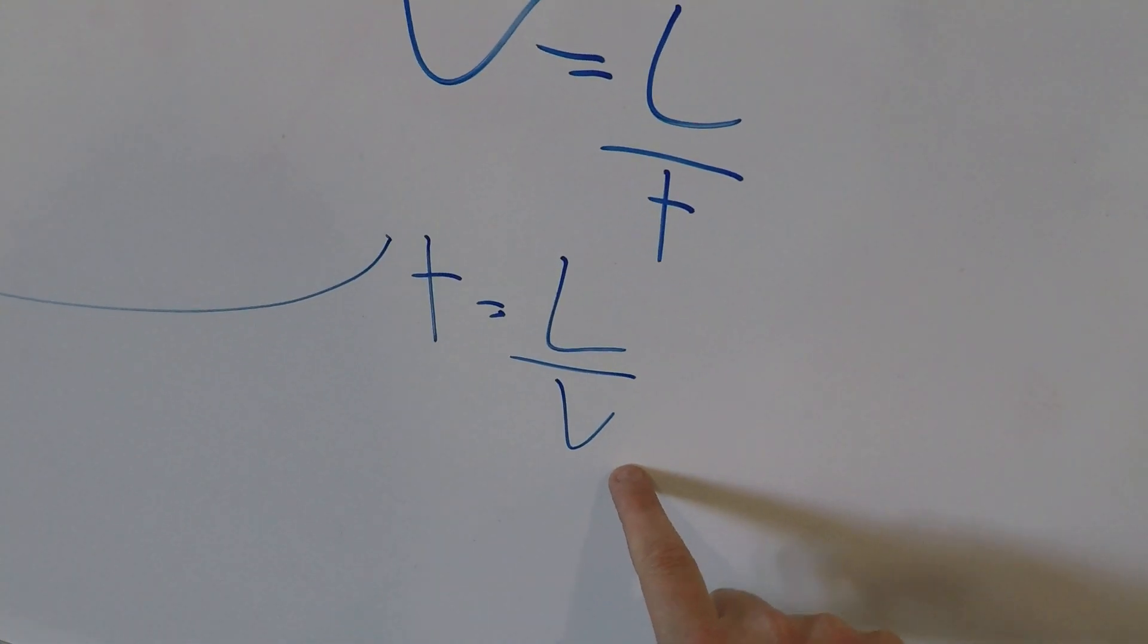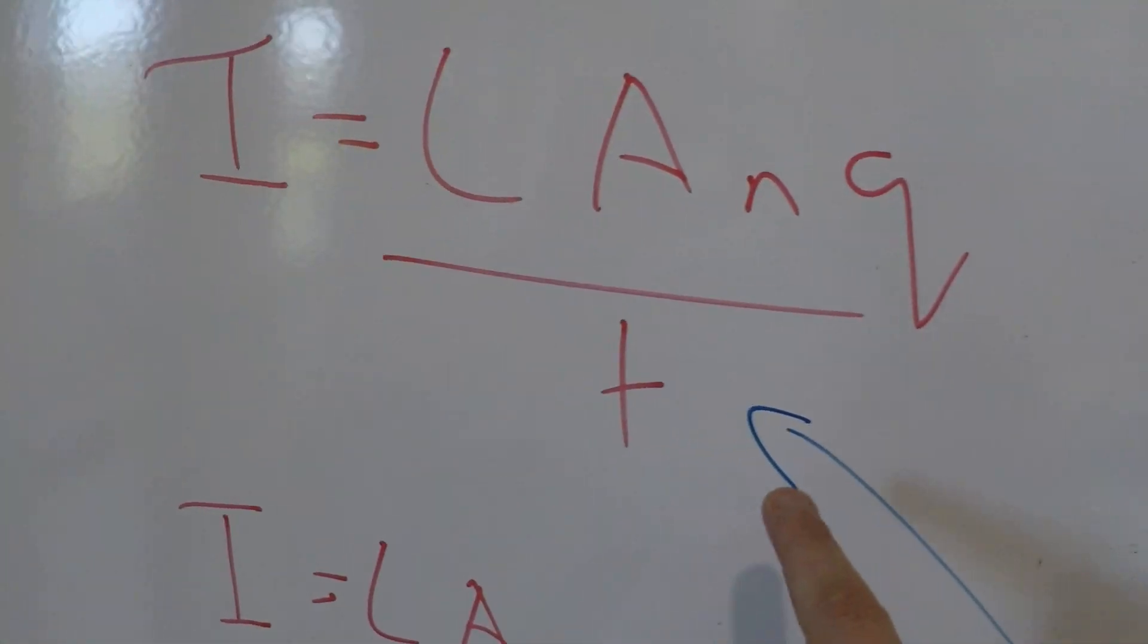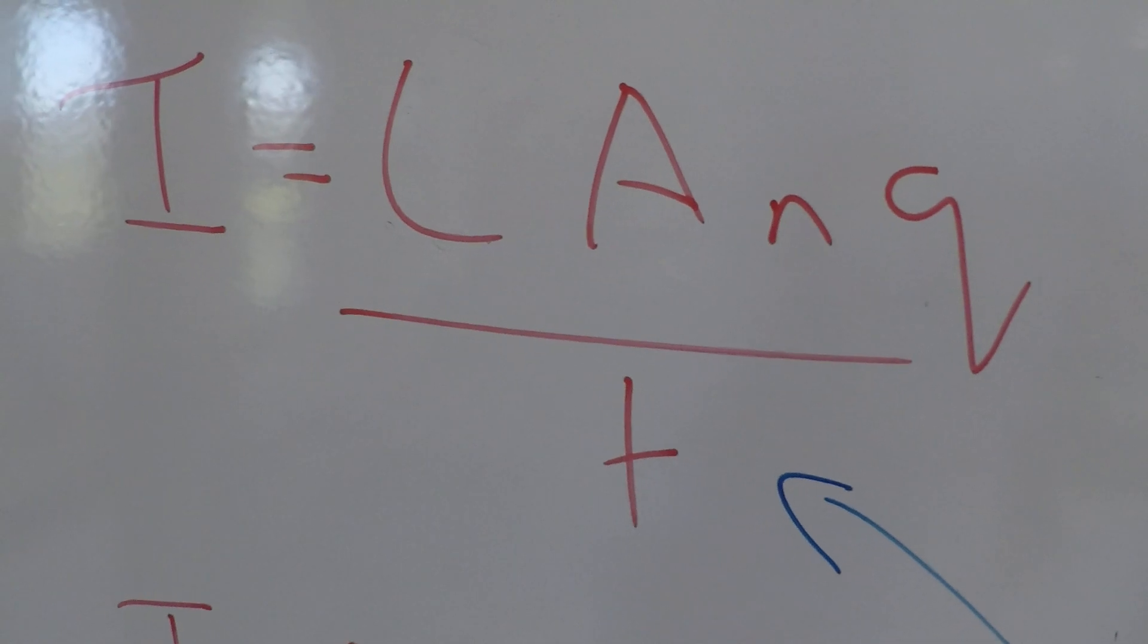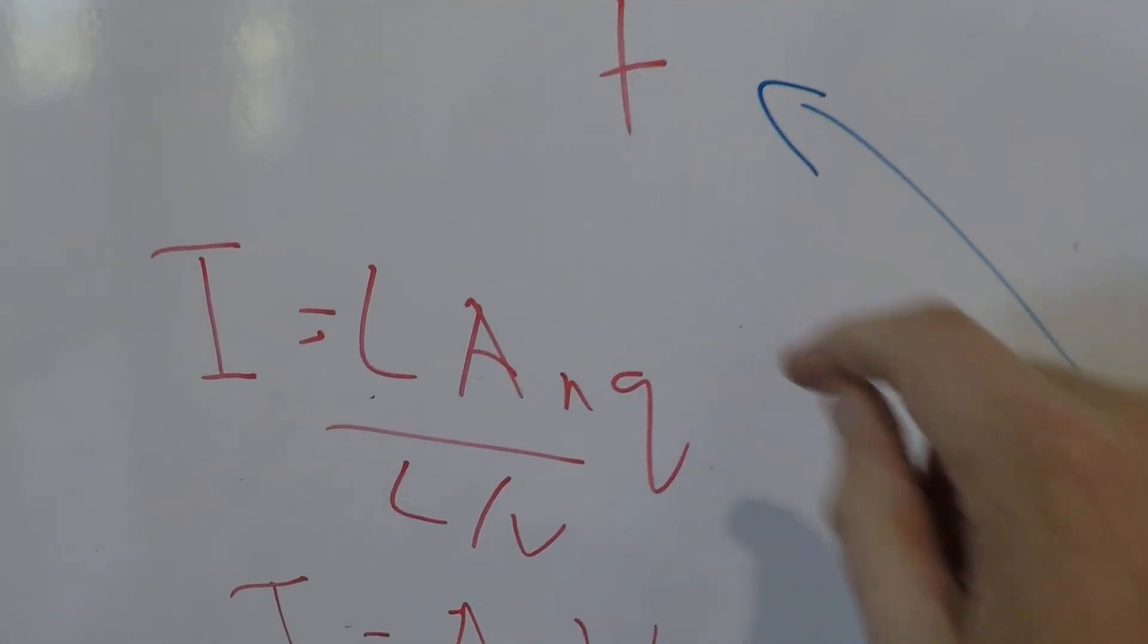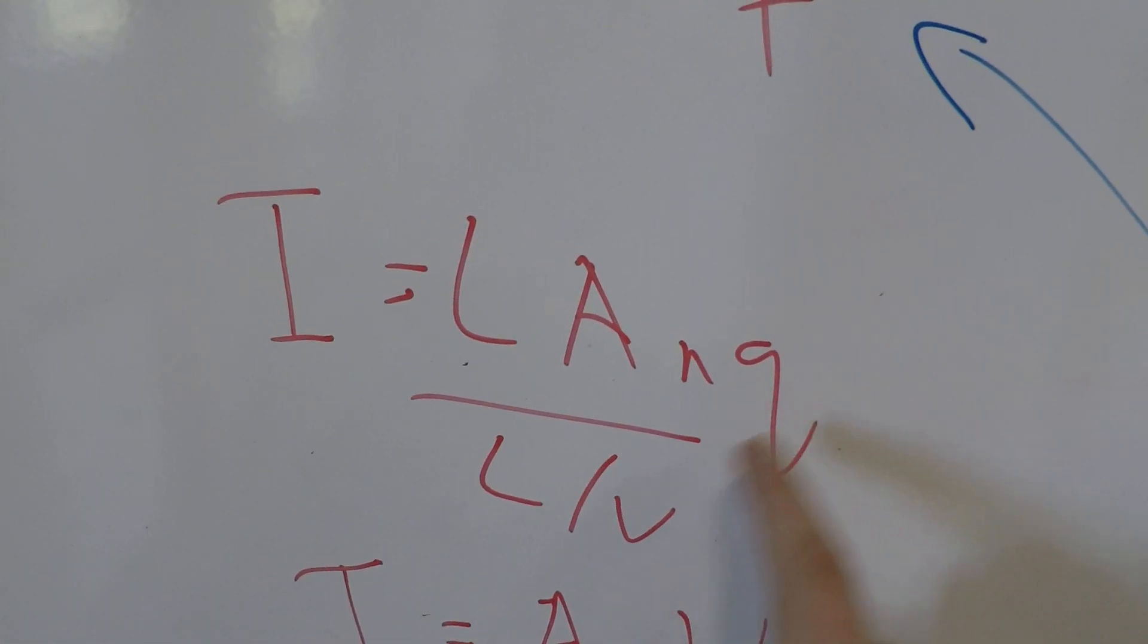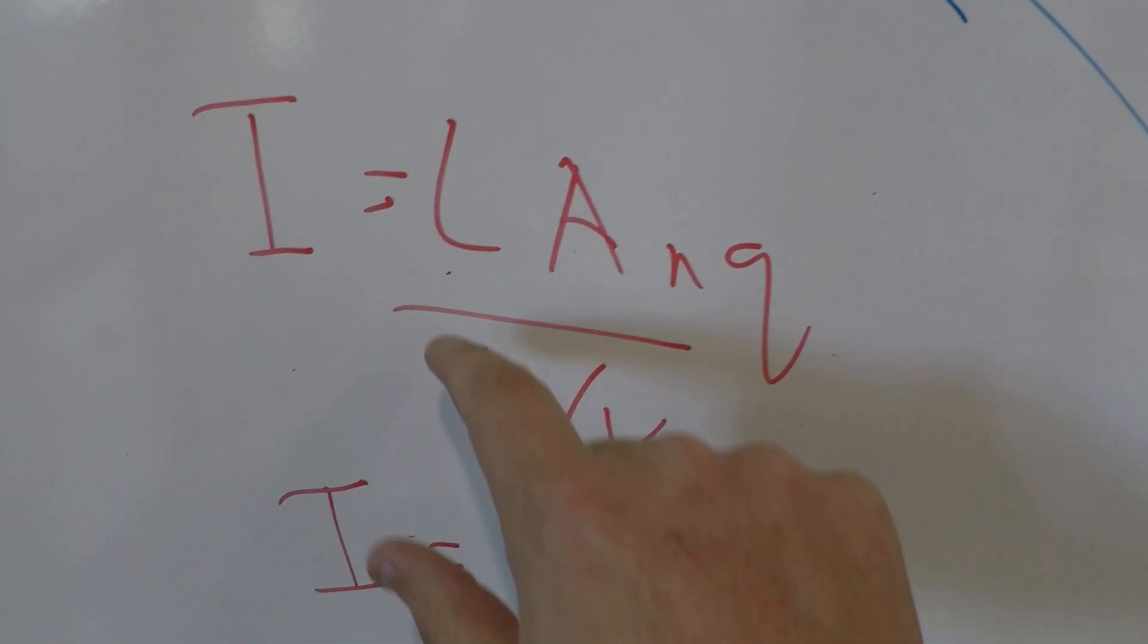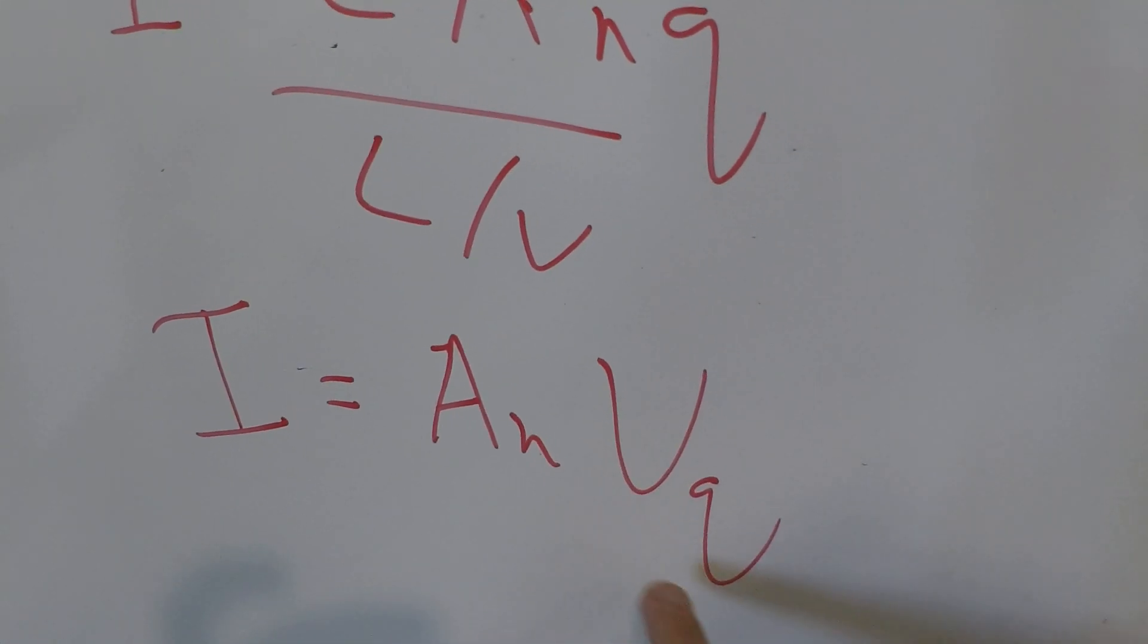And then if we substitute that into here, where this is at the top of the charge that we just talked about before, we end up with this, so I equals L-A-N-Q over L over V, while the L's cancel, and the L ends up going up here, and we end up with I equals A-N-V-Q.